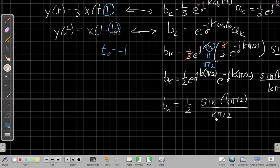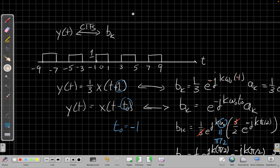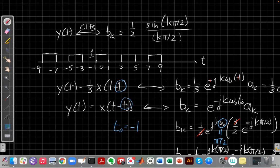Okay, so I can now, maybe I'll bring this back up to the top just to finish up. So I have the final answer for this time signal, y(t) drawn here, has a Fourier series b of k that's equal to the function I just found, 1 half sine of k pi over 2 divided by k pi over 2.